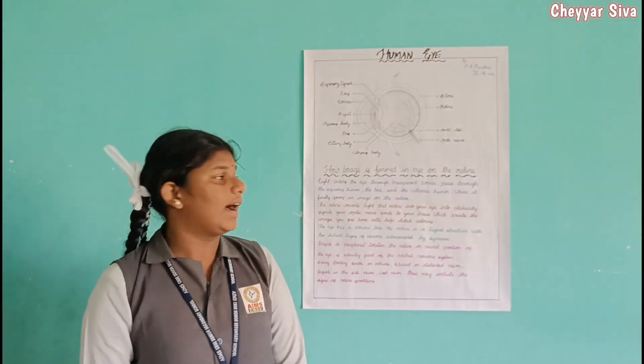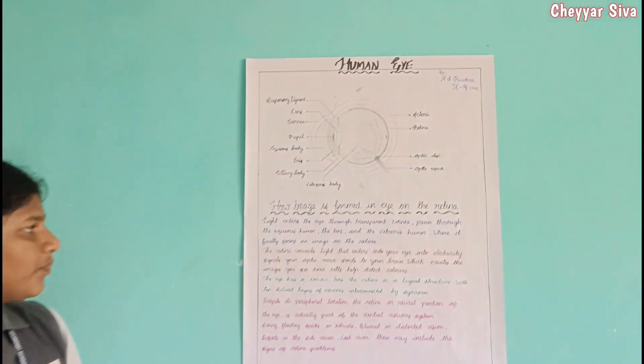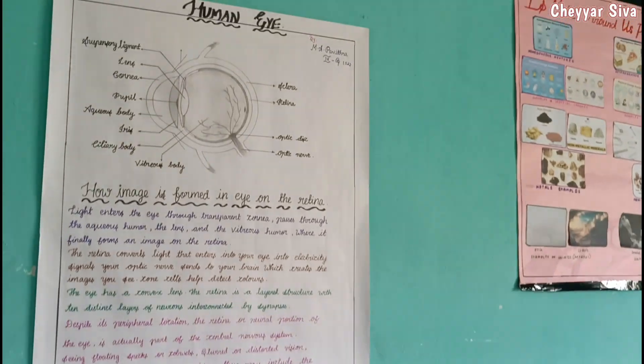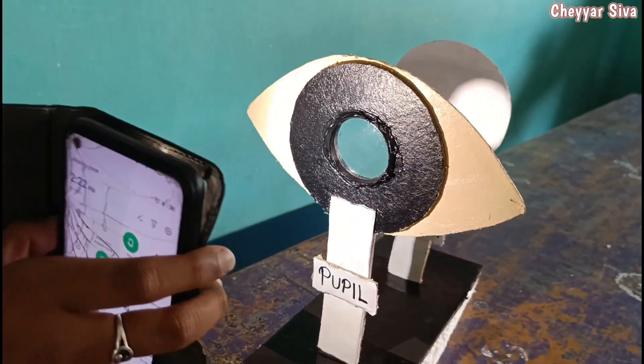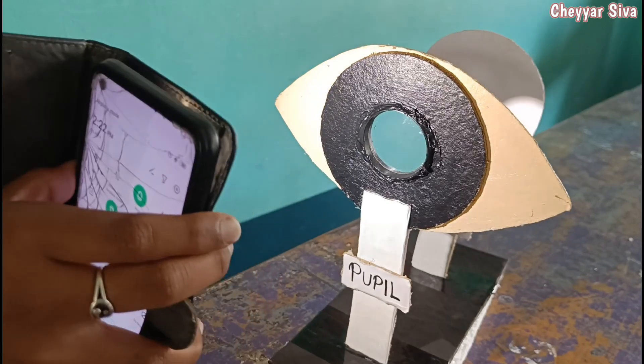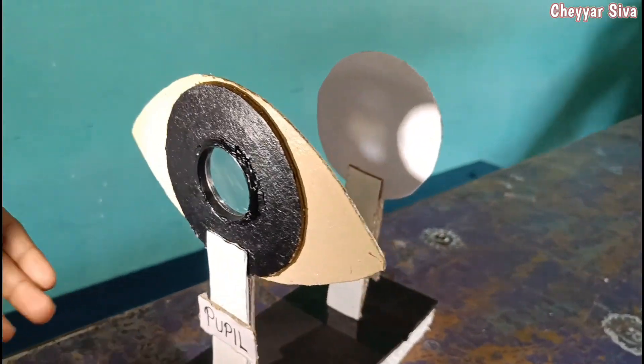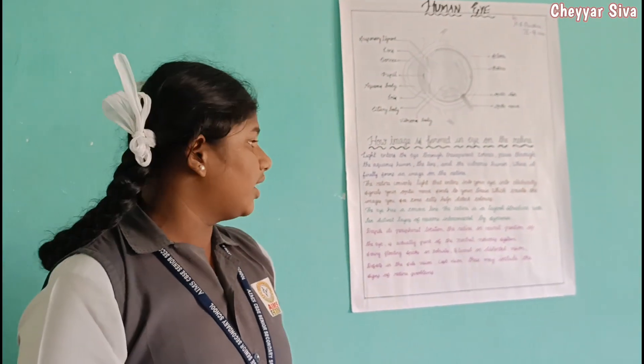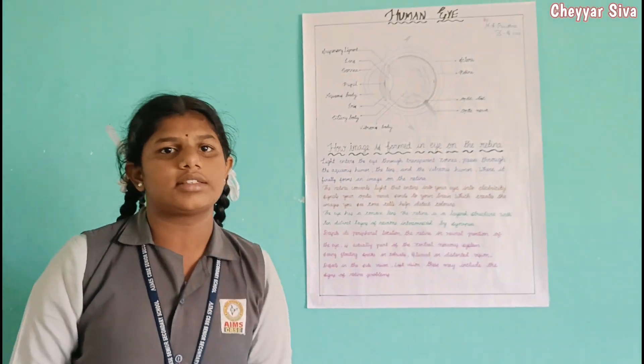Welcome everyone. I am studying 9th standard in NCPS school. I am going to explain how an image is formed in the eye. When light enters the eye, it passes through the cornea and the lens, and then through the vitreous humor, where it finally forms an image on the retina. The retina converts the light that enters the eye into electrical signals sent via the optic nerve.